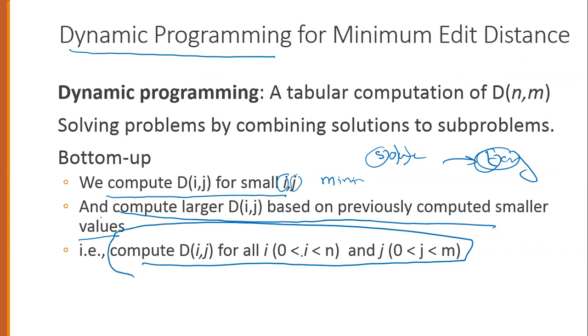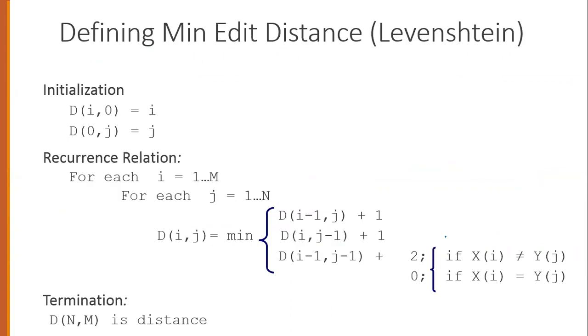We will compute the cost for all source and target string combinations. Here we will see which one is the solution. Let's make sure that the problem is called Levenshtein distance.